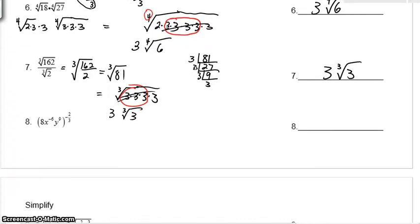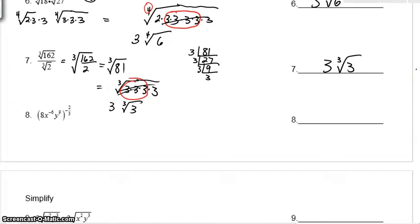Okay, so for number 8, as we look at number 8, all of these items are going to get raised up to the negative 2 3rds power. So I'll take 8 to the negative 2 3rds power. A power to a power is going to get multiplied. So you'll have negative 6 times negative 2 3rds. Here we'll have 9 times negative 2 3rds.